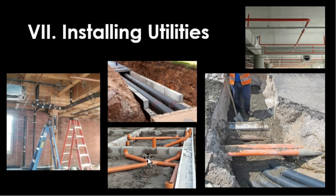Utilities are services such as water, waste disposal, gas, communication lines, and electricity. These need to be installed in many structures in order for them to serve their purpose. Basic utilities in a building include water, a water disposal system, electricity for lighting and air conditioning, gas to heat the building and water, and communication lines for telephone, internet, and TV cable services. The equipment, supplies, and labor for utilities may account for one-third to two-thirds of the entire cost of a building.